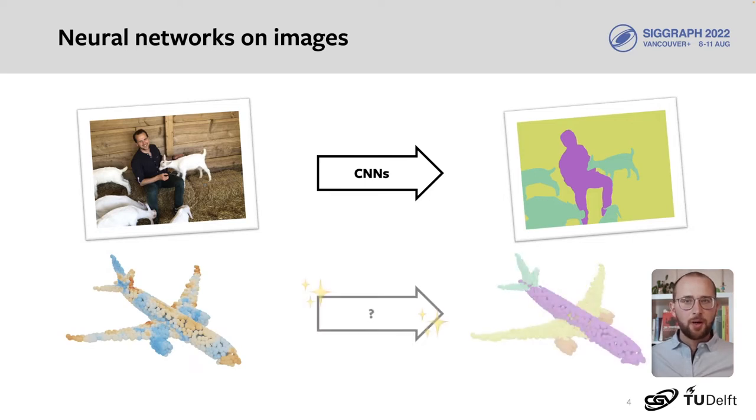On a surface, we might want to segment a shape into its parts, such as the engines and wings of an airplane. In our paper, we focus on point clouds, as they are widely available. We assume there is some surface underlying the point cloud, which is why we'll discuss surfaces in general in most of the presentation.